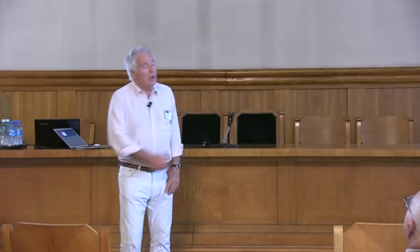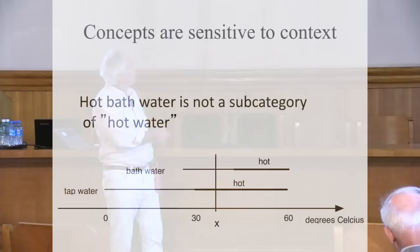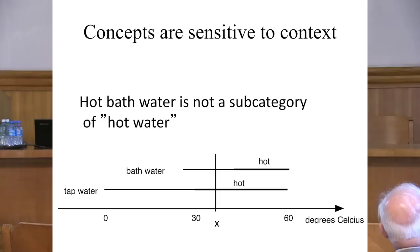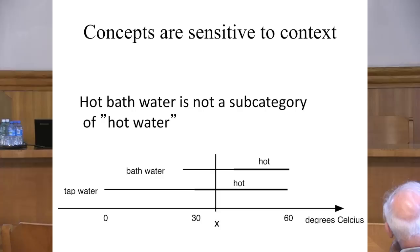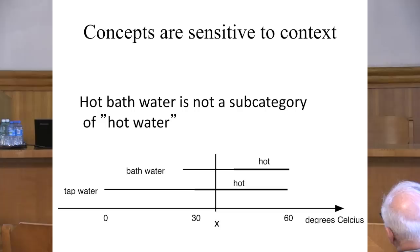I can also explain why concepts are sensitive to context. Let's talk about the word 'hot' — hot tap water in contrast to hot bathwater. Here's the temperature scale. Normally, 'hot' means being in the upper half of a temperature interval. Ordinary tap water is somewhere between 0 and 60 degrees, so hot tap water means being more than 30 degrees. But if you look at bathwater, bathwater is somewhere between maybe 25 and 60 degrees, so hot bathwater means it has to be at least 40 degrees. So 'hot' is dependent on the contrast class and the context — it doesn't have a fixed meaning. It's dependent on the underlying structure.